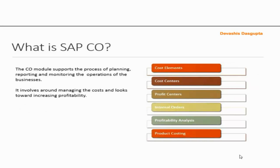What is SAP CO? The CO, that is the controlling module, supports the process of planning, reporting and monitoring the operations of the business. It involves managing the costs and looks towards increasing profitability. Cost elements, cost centers, profit centers, internal orders, profitability analysis, and product costing are the various components of SAP CO.